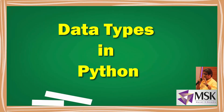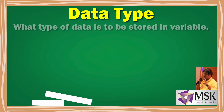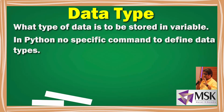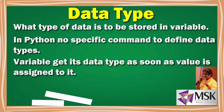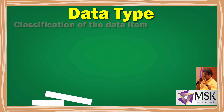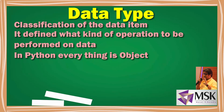Welcome friends. In this lecture I will be explaining the different data types supported by Python. A data type defines what type of data should be stored in a variable. In Python we don't have a specific command to define the data type — a variable gets its data type as soon as the value is initialized. Data types are a classification of data items and represent the kind of value that an operation is to be performed on. In Python, everything is objects.